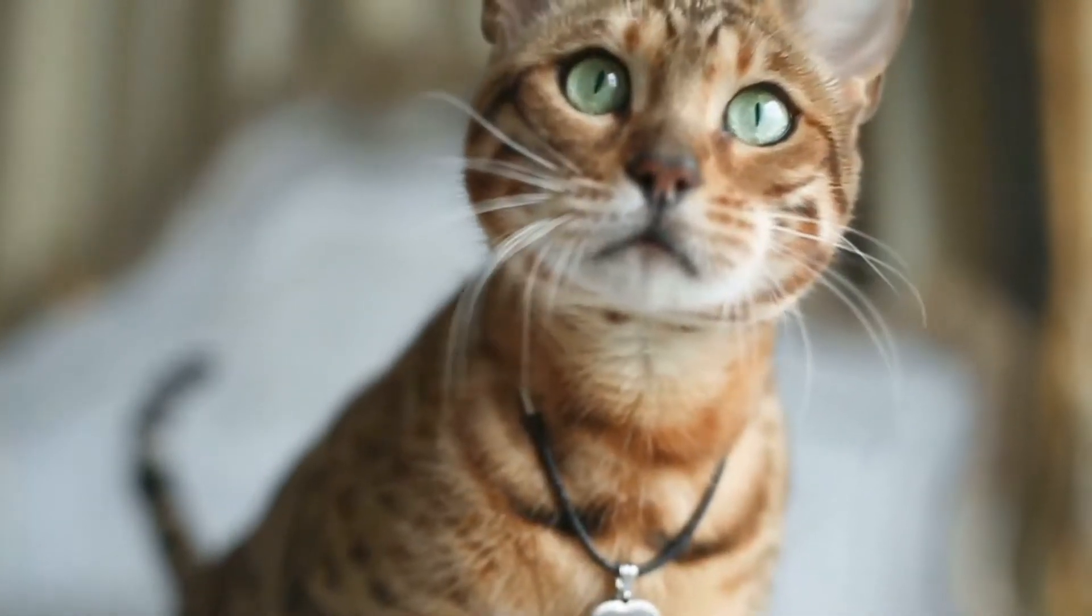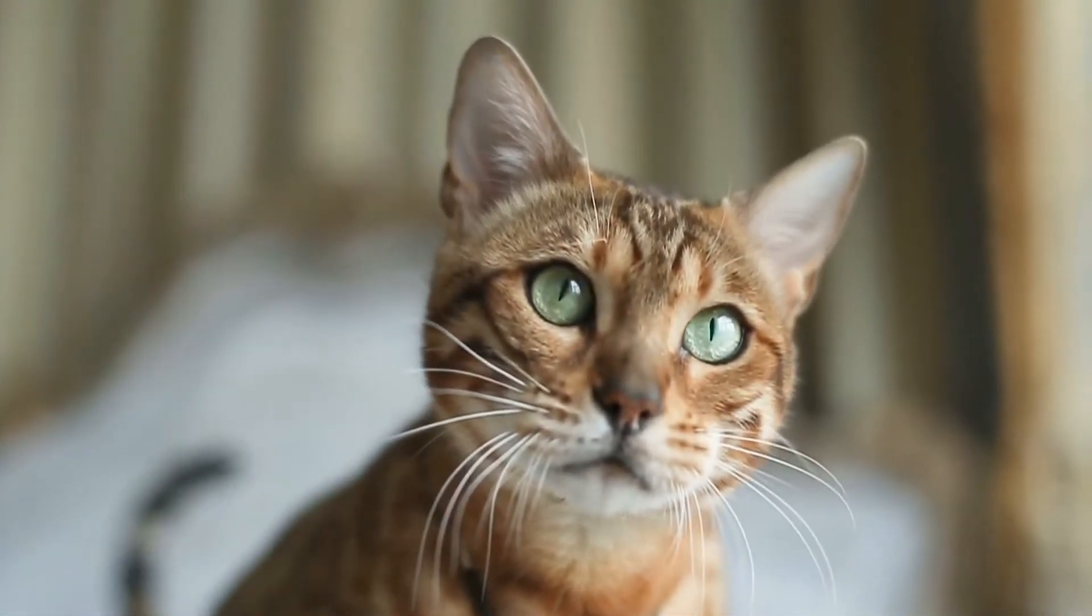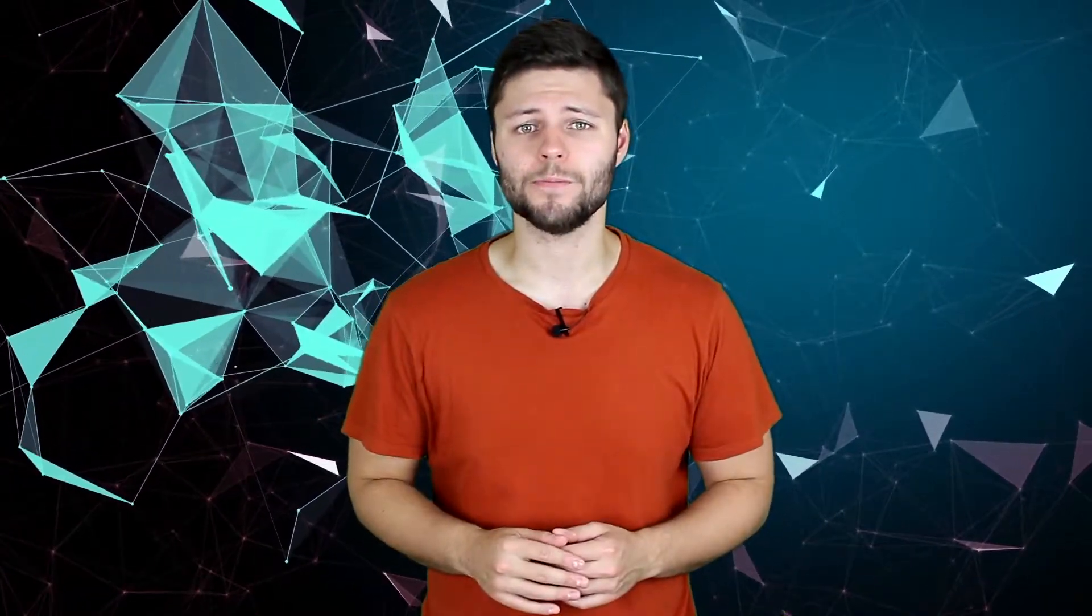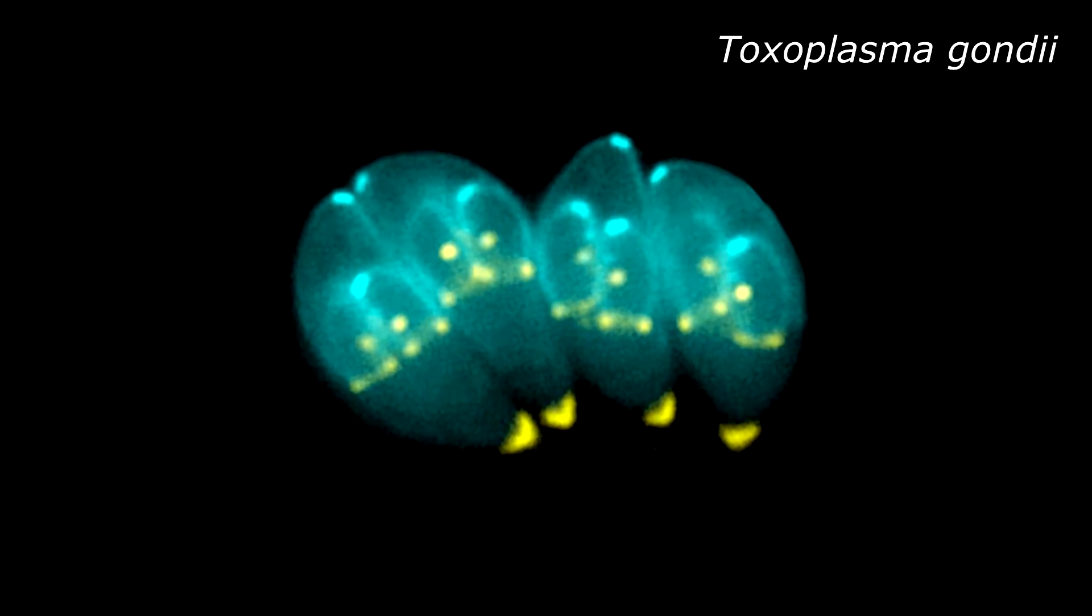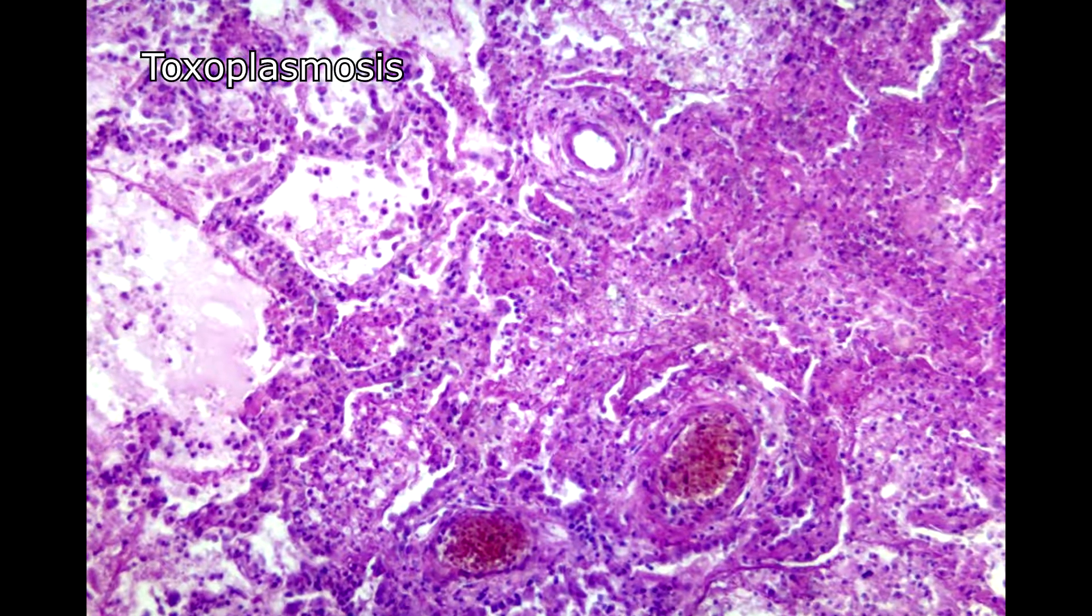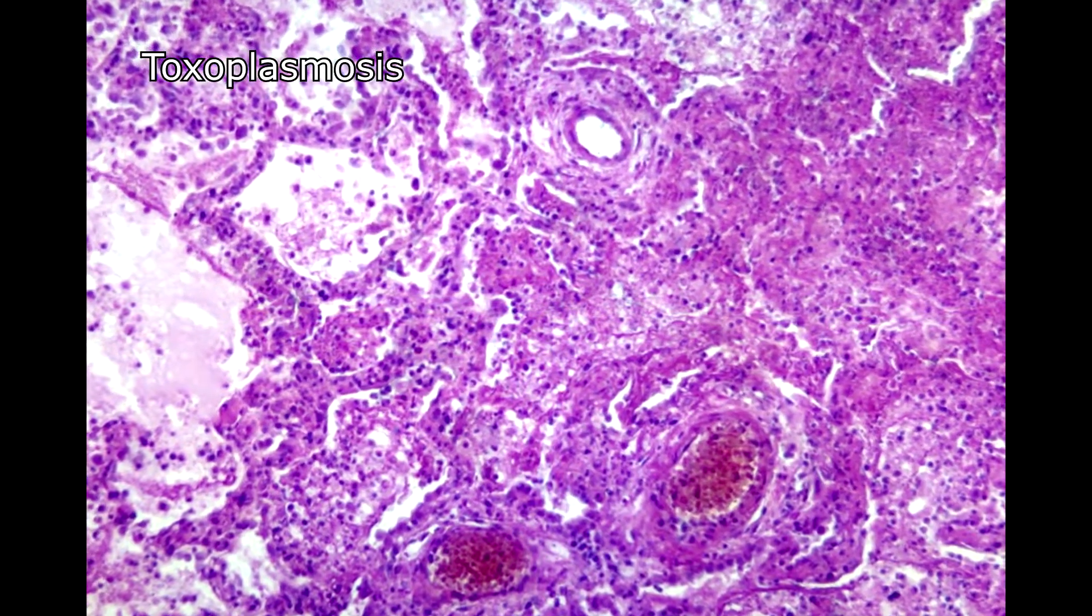These tiny parasites live and reproduce within the cells of cats. That's their definitive host. It can, however, infect virtually all other mammals too. Once this parasite sets up shop inside the cells of its target mammalian host, this then is called Toxoplasmosis.